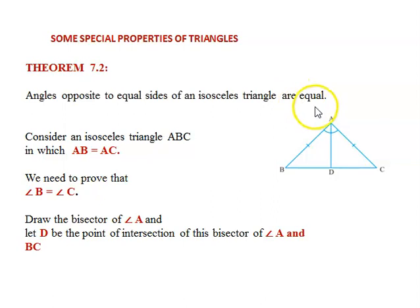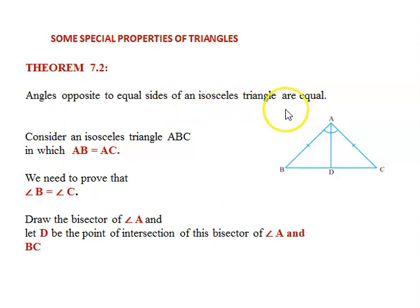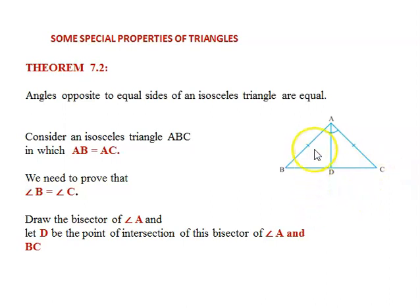But now, based on the congruence criteria we have learnt — that is the SAS congruence and the ASA congruence — we are going to prove this theorem. Can you see the figure? ABC is a triangle, and what you observe is that side AB is equal to side AC.